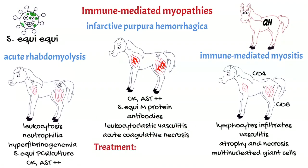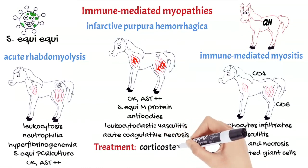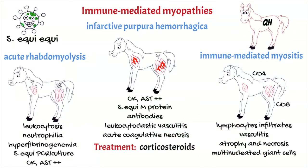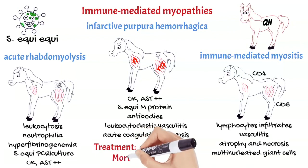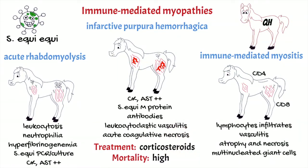The treatment of immune-mediated myopathies is based on the use of corticosteroids or other immunosuppressive drugs. But if there is a concomitant infection with Streptococcus equi, an adequate antimicrobial treatment should also be instituted. Mortality is high, but early and aggressive treatment may be effective.